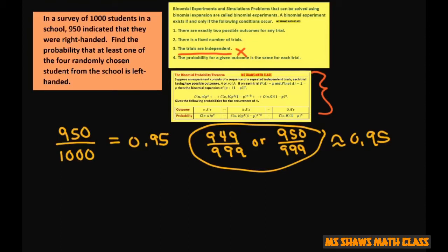So we want to find at least one. The probability of at least one left-handed is going to be one minus the probability of all right-handed.